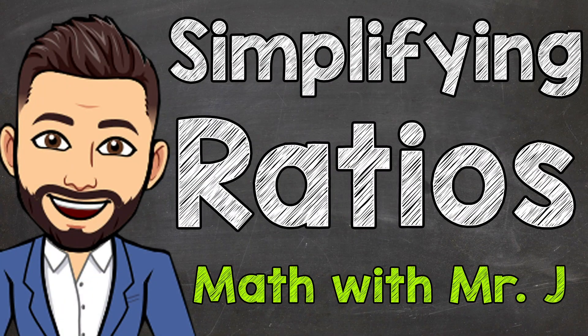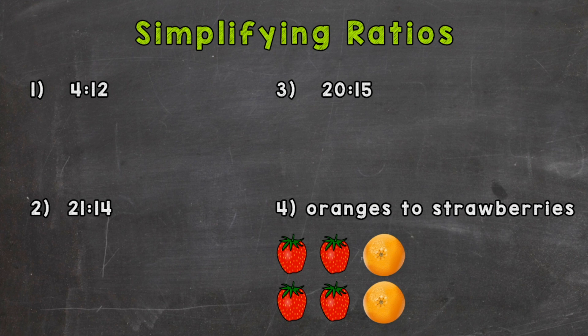Welcome to Math with Mr. J. In this video, we're going to take a look at simplifying ratios, and I'm going to go through four examples with you in order to help you get this down. So let's take a look at number one, where we have a ratio of 4 to 12.